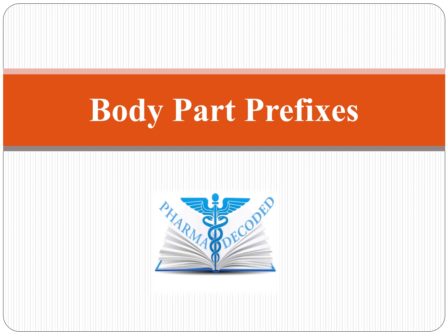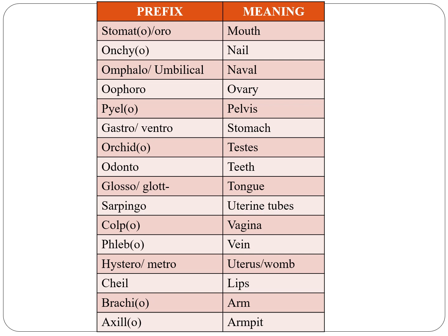Hello everyone, now let us discuss about the prefixes pertaining to body parts. The first one is stomato or oro — both indicate mouth. Next is onco, which indicates nail. The next is omphalo or umbilical, which indicates navel.